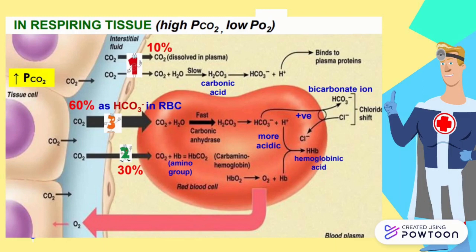For the 30% of carbon dioxide, we can call it as carbaminohemoglobin. This is because the carbon dioxide combines with the amino group of hemoglobin to form carbaminohemoglobin.